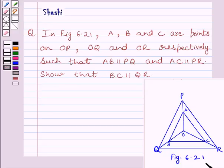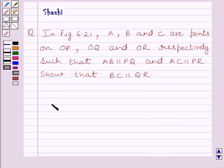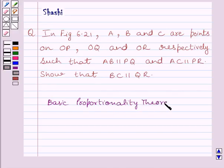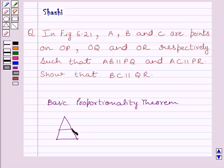This is the given figure 6.21. First of all, let us recall the Basic Proportionality Theorem. It states that if a line is drawn parallel to one side of a triangle, intersecting the other two sides at two distinct points, then the other two sides are divided in the same ratio by this line.